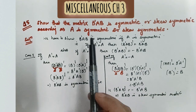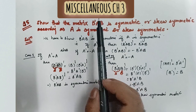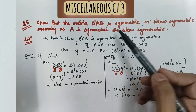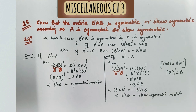So this is how you approach this question. First, take A as symmetric and show B'AB is symmetric. Then, by taking A as skew-symmetric, show B'AB is also skew-symmetric. I hope you understand this question well. You can go through the videos of other solutions by checking the playlist provided in the description box. Practice all the questions in the exercise. Thank you so much.